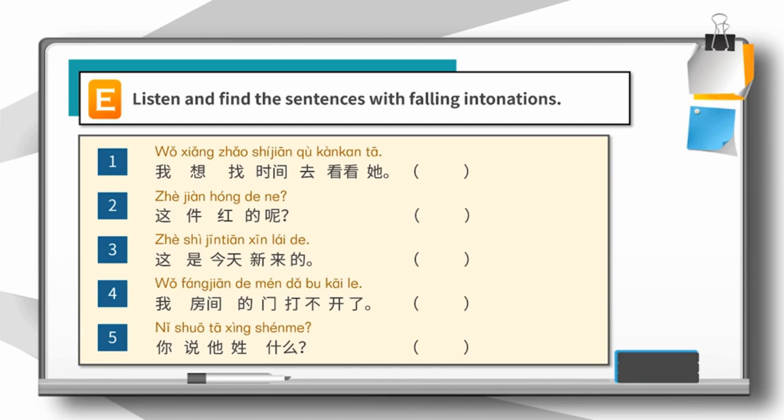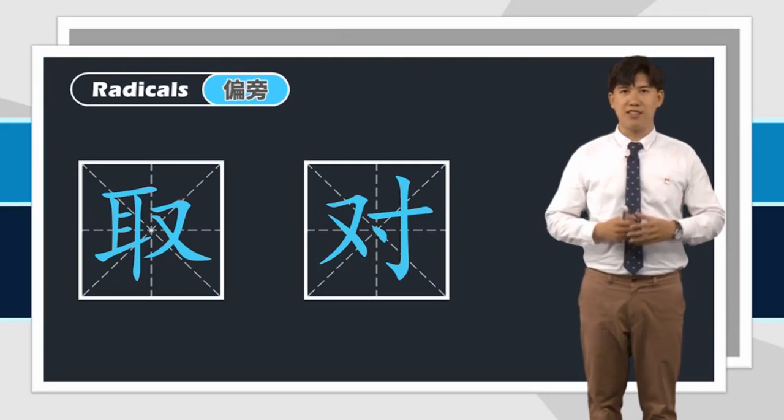Let's check the answers. Sentences 1, 3, and 4 are declarative sentences, so they are in falling intonations. Let's read them together: 1. 我想找时间去看看他. 3. 这是今天新来的. 4. 我房间的门打不开了. 很好. That's all for today's pronunciation part.